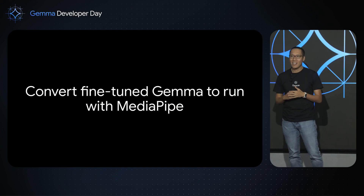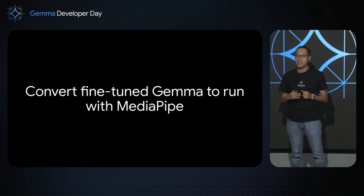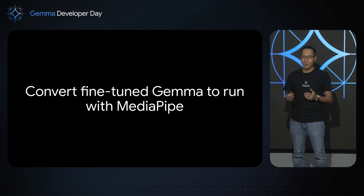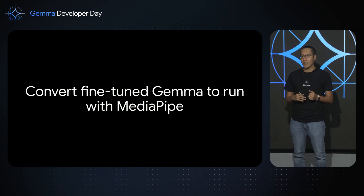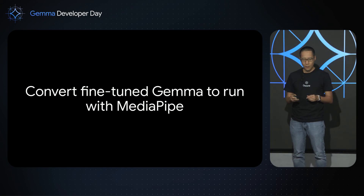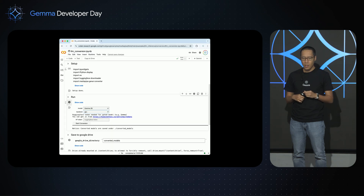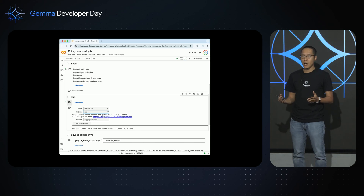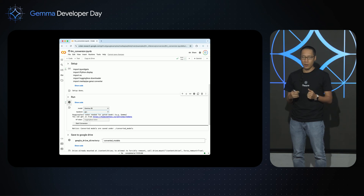The nice thing about Gemma is that it's an open-weight model, so you can customize it to fit your needs — such as fine-tuning it to be better in Japanese, just like what you saw earlier today. The good news is that you can easily convert your fine-tuned Gemma model to run on MediaPipe. You can take a fine-tuned Gemma checkpoint, run it through our conversion script, wait a few minutes, and now you have a model bundle that can run on MediaPipe. We've published a Colab notebook you can use to convert your fine-tuned checkpoint without writing any code.